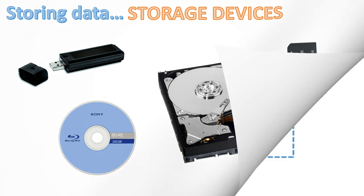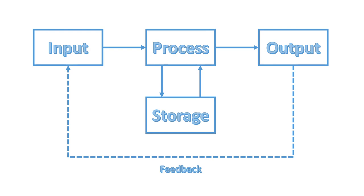Here is a diagram you'll need to learn. Data goes into the input section via a mouse, sensor, or any input device. The data is then processed, and from that process two things can happen: either the data is stored, or it is output. Stored data can sometimes be used as input later on, or it may just be kept for long-term or archival use.